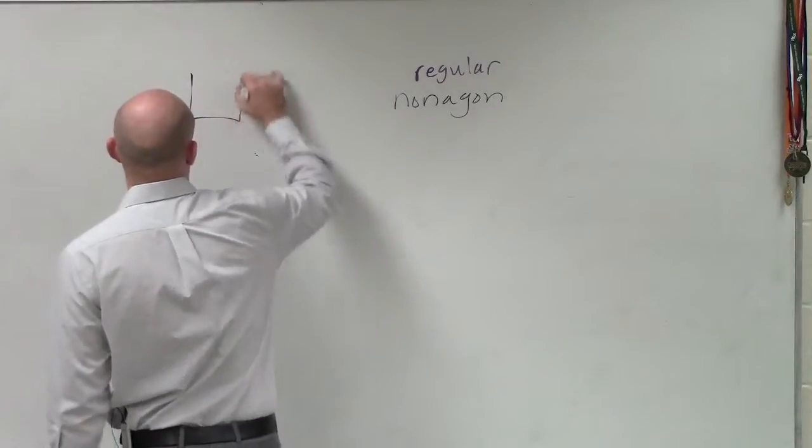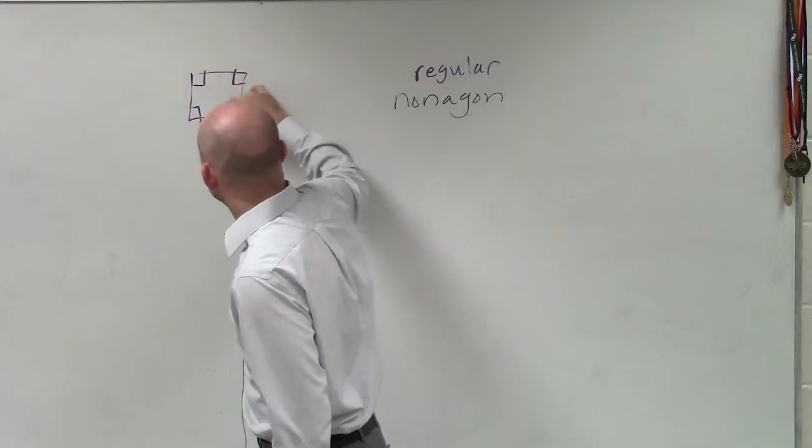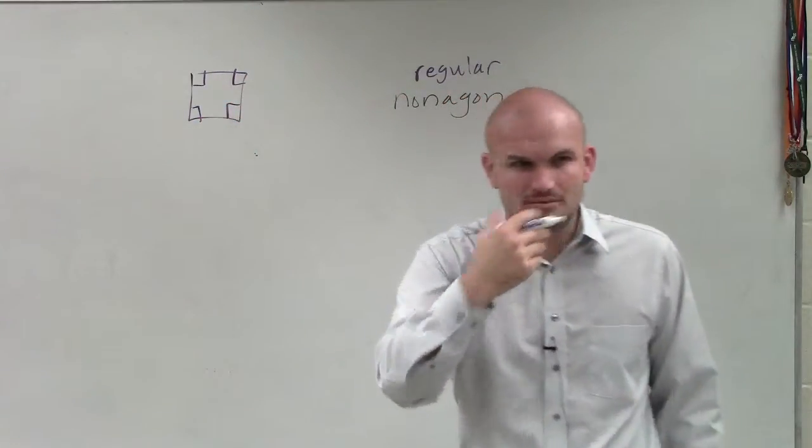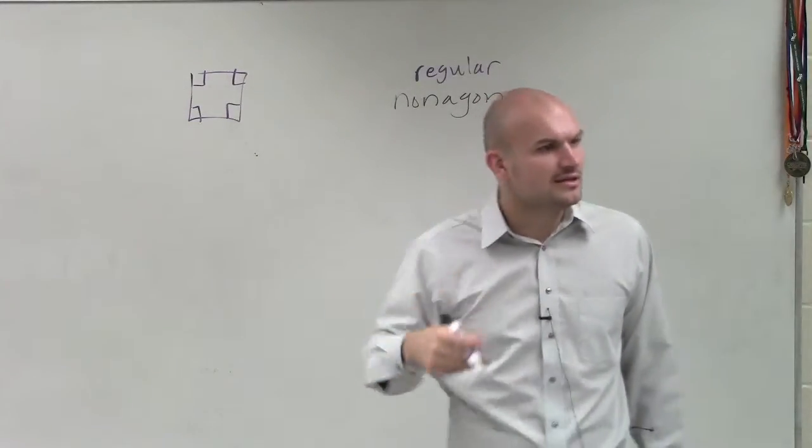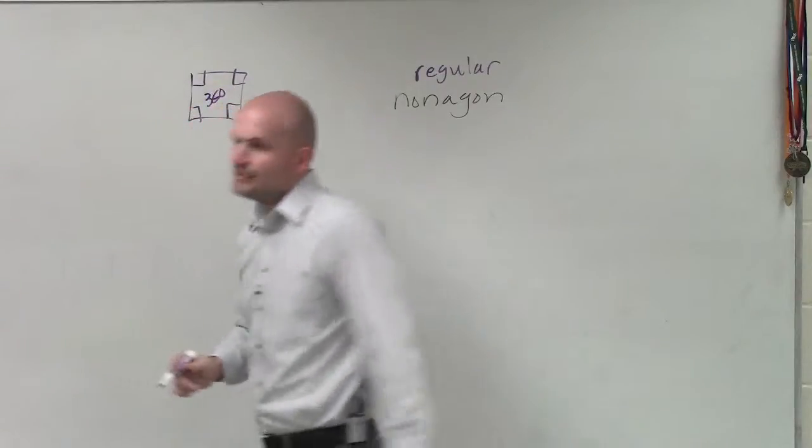You guys understand a square, right? Square has four right angles. And does anybody remember what was the sum of a quadrilateral? What's the sum of a quadrilateral? The angles all add up to 360, right? But if you guys think about it,